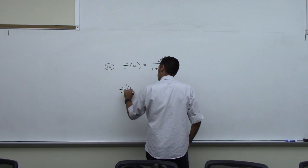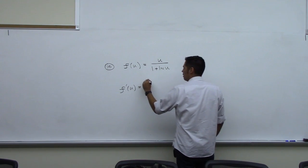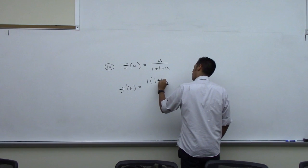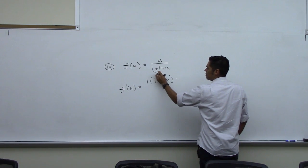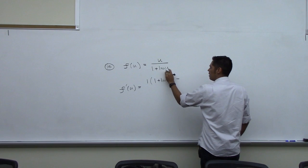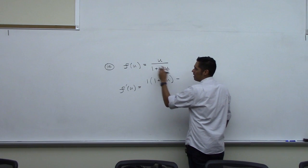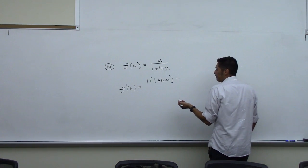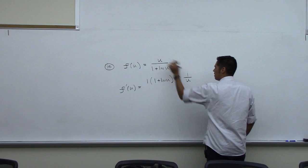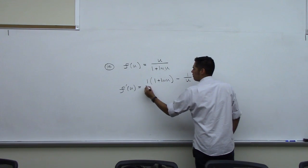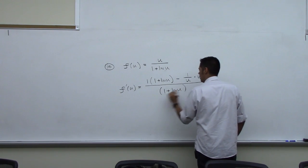The derivative of this should be: the derivative of the top — the derivative of u with respect to u should be 1 — times the bottom, minus the derivative of the bottom. We have two terms down here, so the derivative of 1 is 0. The derivative of natural log of u is the same as the derivative of natural log of x, because u is the independent variable. So the derivative of natural log of u should just be 1 over u. That's the derivative of the bottom, then times the top, then all over the bottom squared. When I square the bottom I get 1 plus natural log of u, that whole quantity squared.